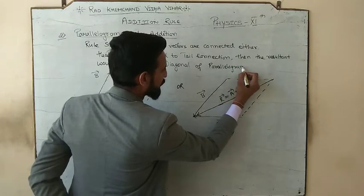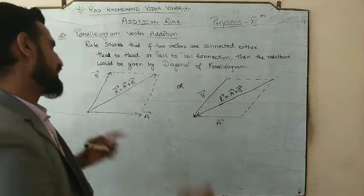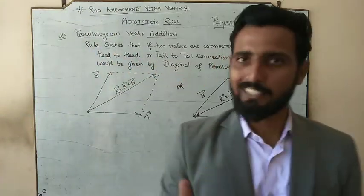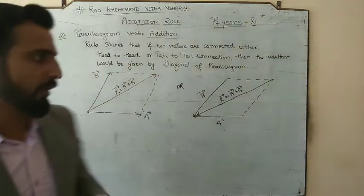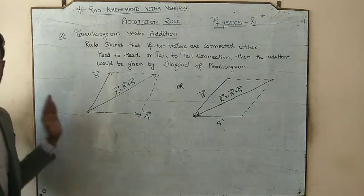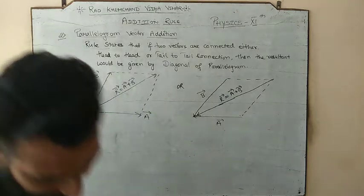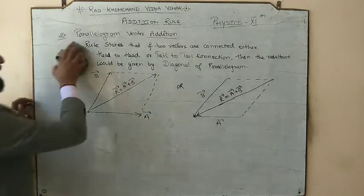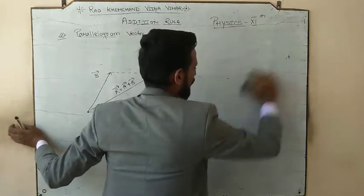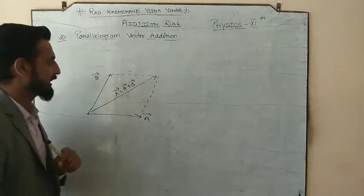Whatever the length of the diagonal, that would be the magnitude of the resultant, because the length of the vector represents the magnitude. Whatever the angle of the diagonal, that would be its direction. So please note down the statement and the basic diagram — either they can be tail to tail, or they can be head to head.